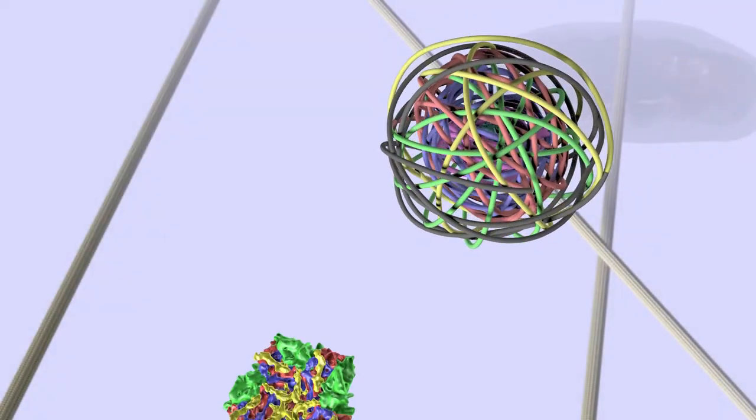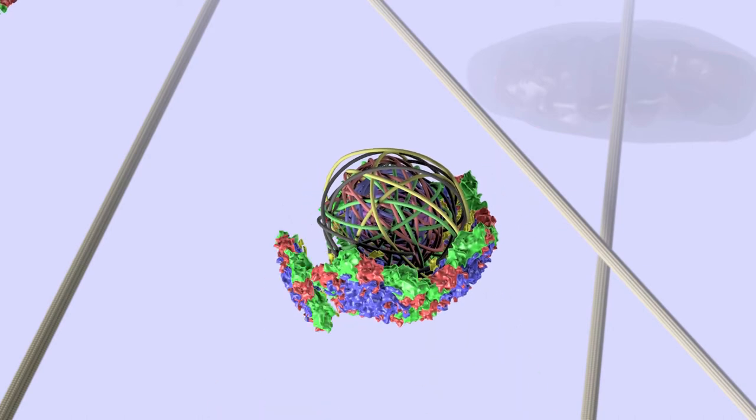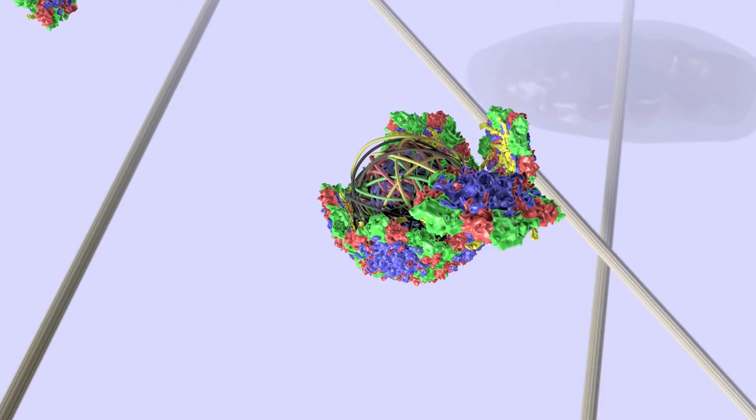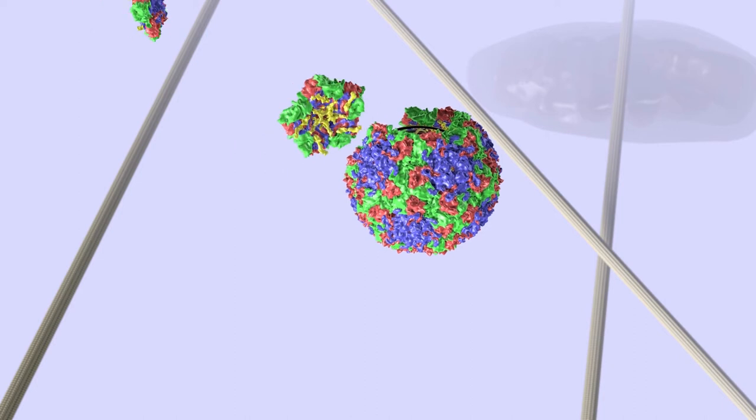The genome collapses into the ball of string and is then surrounded by these pentamers, which lock together to form a sealed shell, which is the virus.